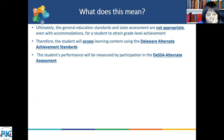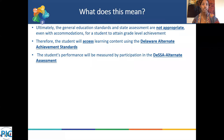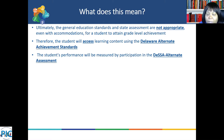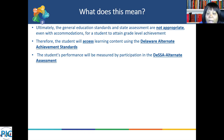The general education standards and state assessment is not appropriate, even with accommodations, for a student to attain grade level achievement. The student must access learning content using the Delaware Alternate Achievement Standards, which means they are instructed using the Dynamic Learning Maps essential elements. The student's performance will be measured by participation in the DESA alternate assessment. It's very important that parents know from the outset that their students are being instructed on the essential elements, which are less complex in depth, breadth, and complexity.